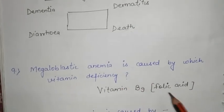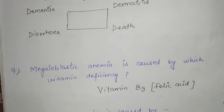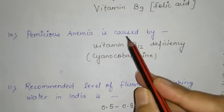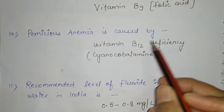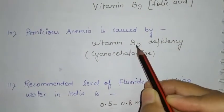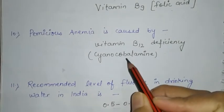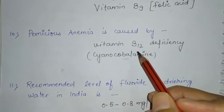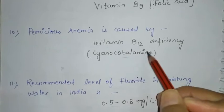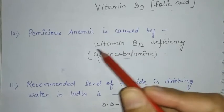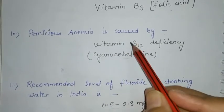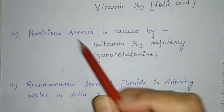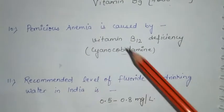Megaloblastic anemia is caused by vitamin B9, i.e. folic acid. Pernicious anemia is caused by vitamin B12 deficiency, i.e. cyanocobalamin. Vitamin B12 contains a cobalt atom, and its deficiency leads to pernicious anemia.